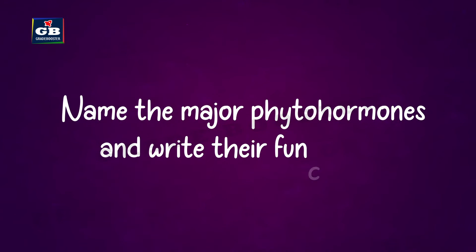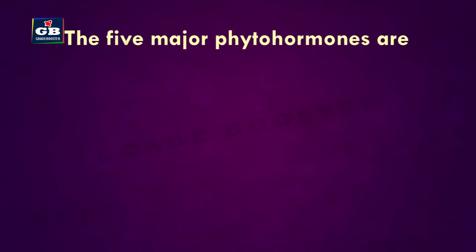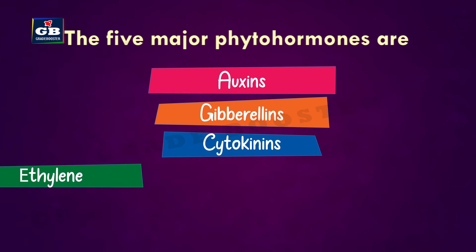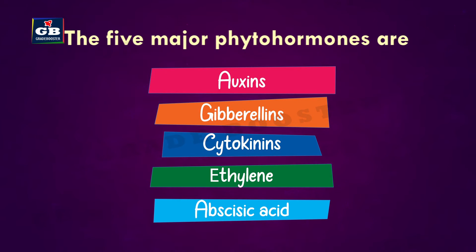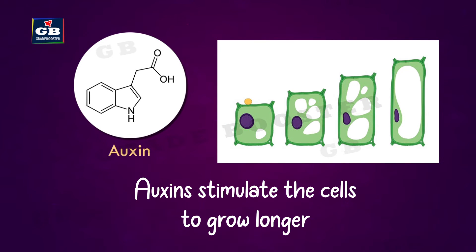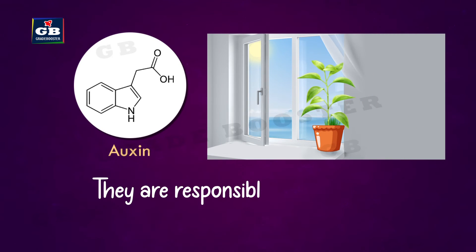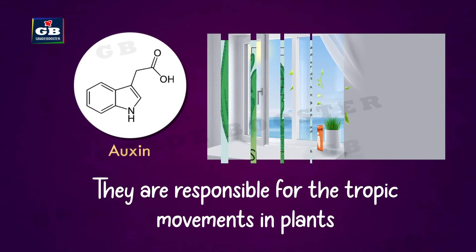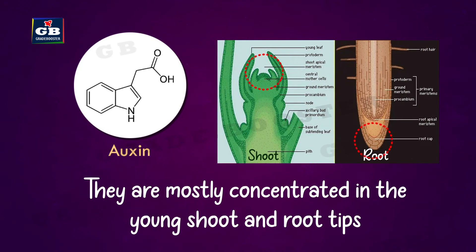The five major phytohormones are auxins, gibberellins, cytokinins, ethylene, and abscisic acid. Auxins stimulate the cells to grow longer. They are responsible for the tropic movements in plants. They are mostly concentrated in the young shoot and root tips.